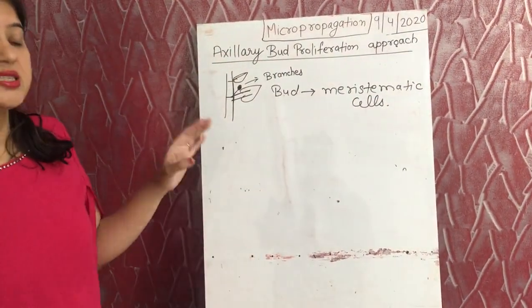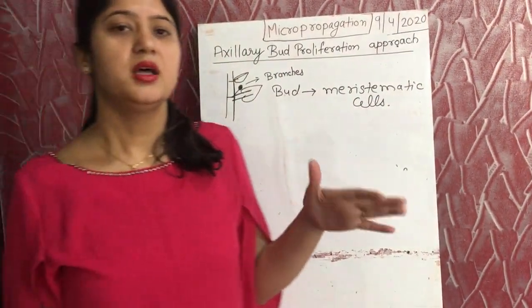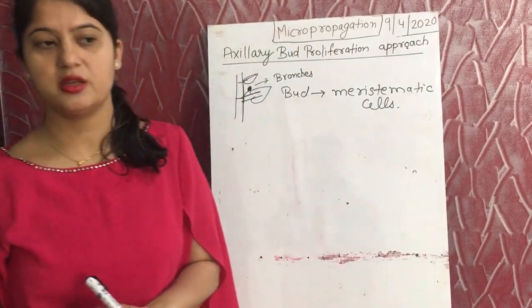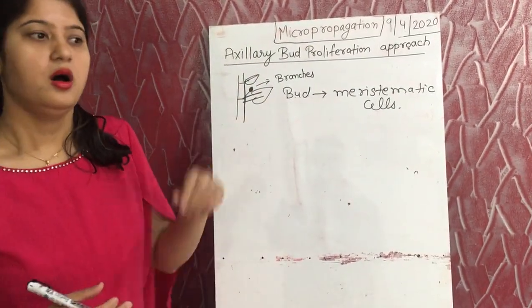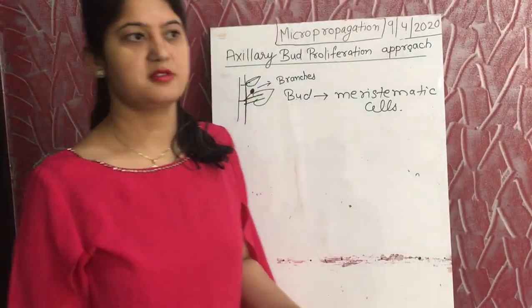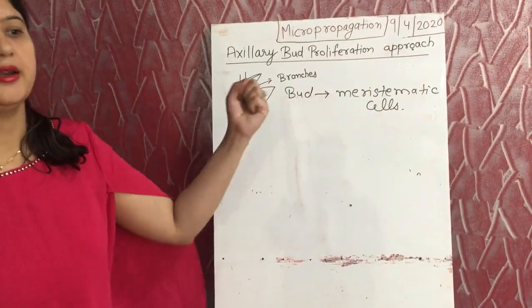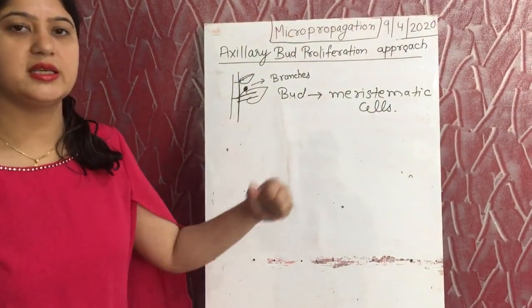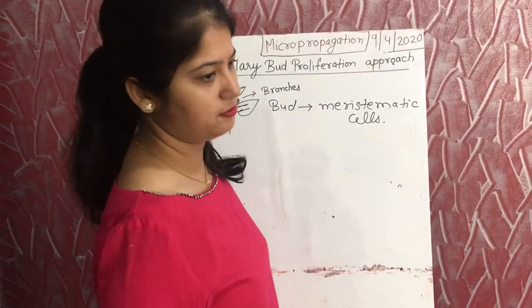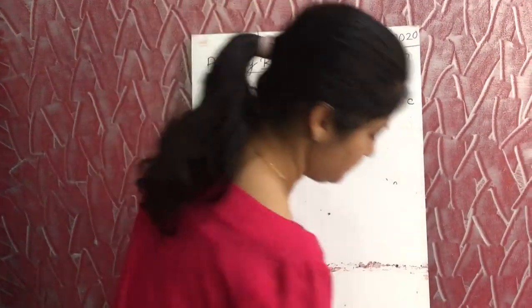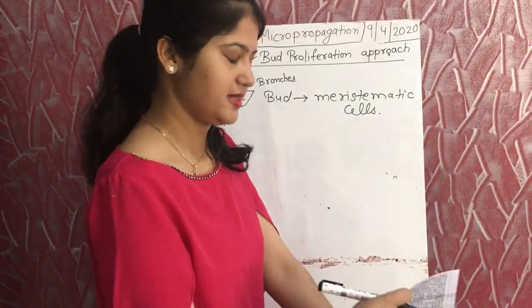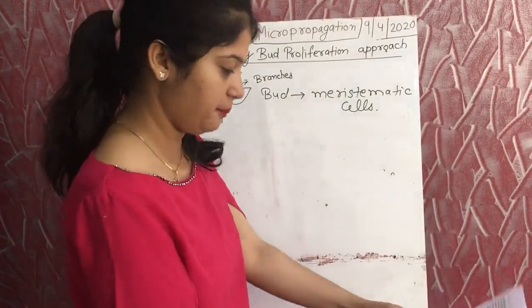Sometimes these buds are in a dormant state, so we give a continuous application of cytokinin, or alternatively, we can take out these axillary buds at the end of the dormancy period. This concludes the brief discussion of the axillary bud proliferation approach.